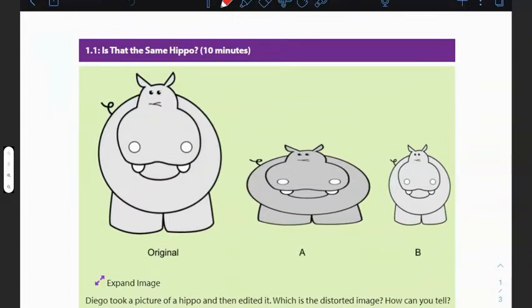Basically what's happening is this kid, Diego, took a picture of a hippo. All right, and that's the original one. Then he edited it. Now, which one is the distorted image? How can you tell? Well, is there anything about the pictures that could measure to test whether there's been a distortion? He has his original, and then he basically makes two other images from the original.